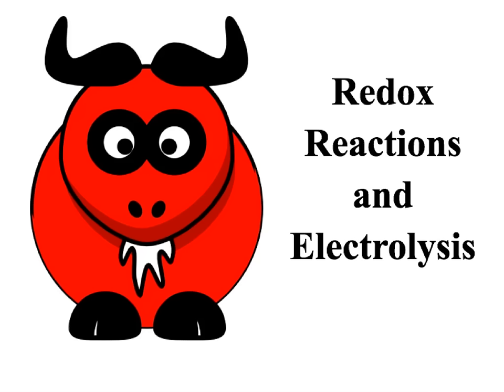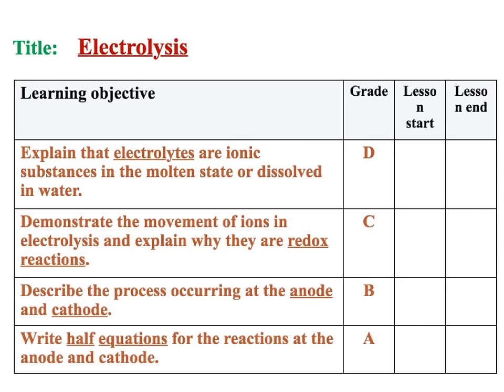This is the fifth video tutorial in the Edexcel C3 revision tutorial series. Today we will be looking at redox reactions as well as electrolysis, which is why we have this picture of a red ox here. In today's video we will look at what electrolytes are, the movement of ions in electrolysis, what we mean by redox reactions, the processes occurring at the anode and at the cathode, and finally we will practice writing half equations for these reactions.